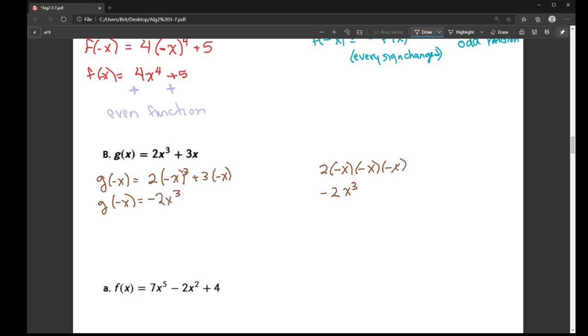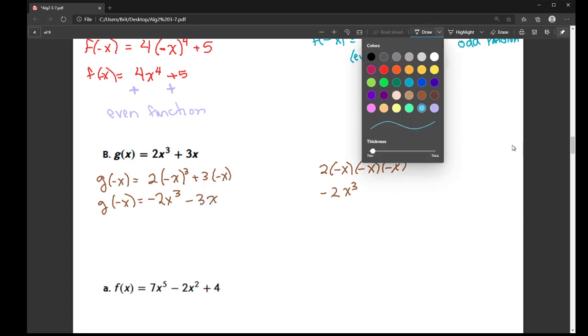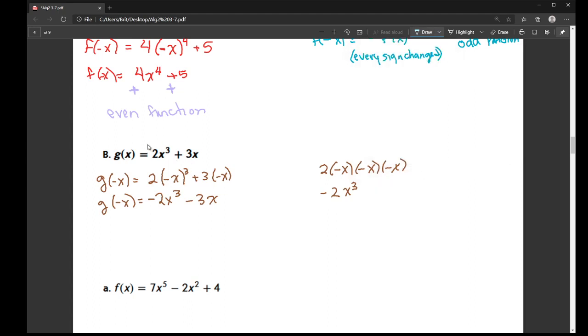And remember, you look at the exponent, and if it's odd, it just changes whatever the sign was. Now here, three times negative x is negative 3x. So let's take a look at our signs. I had a positive and a positive. And down here, I have a negative and a negative. So because every single sign changed, this is an odd function.